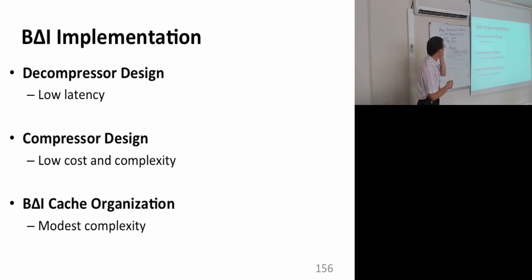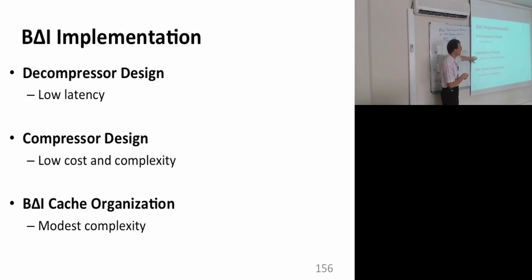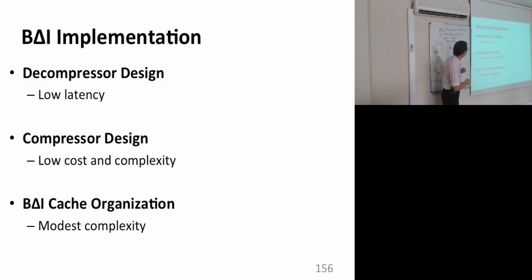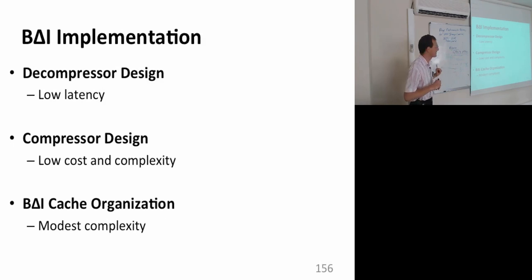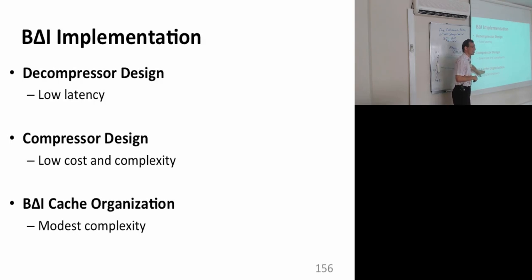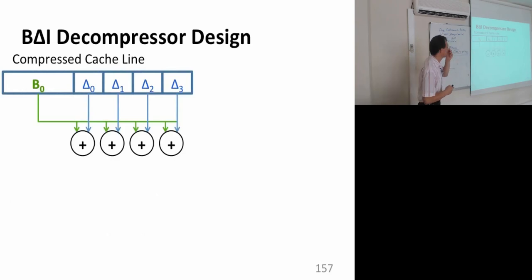Let's look at the implementation. The decompressor needs to be low latency. We have an RTL implementation and the energy overheads are low. The compressor design has low cost and low complexity and is usually not on the critical path, so it can be slightly more complex. Cache organization is the tough part because it needs to change the cache structure, and that's usually the problem when implementing this in a real processor.